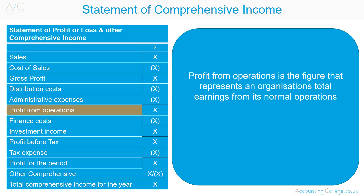Profit from operations is the figure that represents an organisation's total earnings from its normal operations. It is an organisation's income before any non-operational income or expense such as interest received or taxes are subtracted. Operational income is often viewed by financial analysts as more reliable than the net income figure for judging an organisation's performance, as it is the income within the control of the organisation's managers. The likes of interest and taxes are outwith the control of the managers.